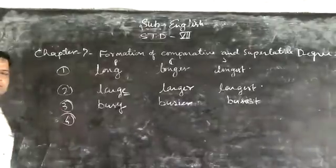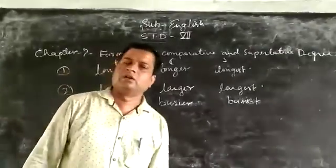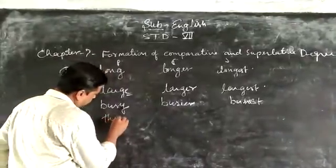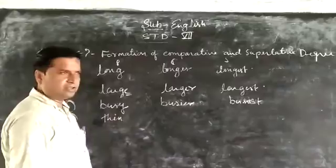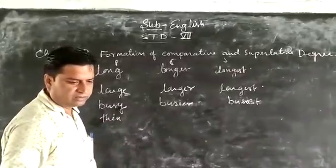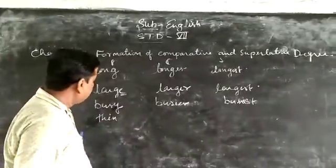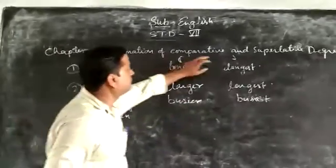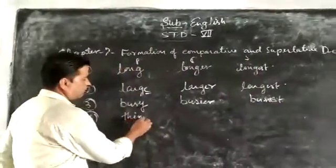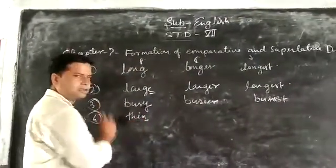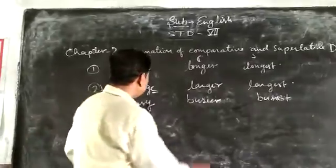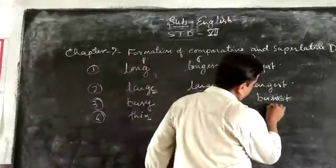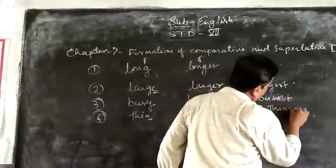There are some adjectives which are monosyllabic, meaning they have one syllable. Such words, like 'thin', 'big', and 'red', have a consonant-vowel-consonant pattern. When we form the comparative and superlative, we double the last consonant and then add ER and EST.